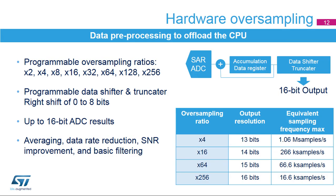The ADCs support hardware oversampling. They can sample by 2, 4, 8, 16, 32, 64, 128, and 256 times without CPU support. The converted data is accumulated in a register, and the output can be processed by the data shifter and the truncator. 12-bit data can be extended to be presented as 16-bit data. This functionality can be used as an averaging function or for data rate reduction and signal-to-noise ratio improvement, as well as for basic filtering.